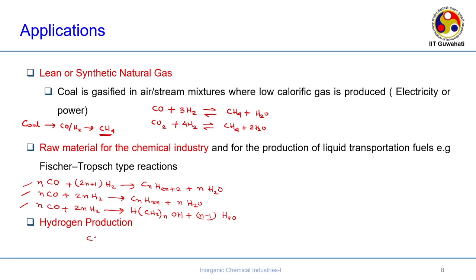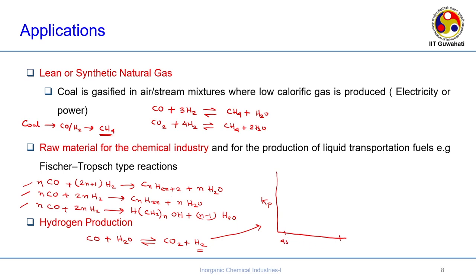For hydrogen production, the water gas shift reaction is used: CO plus H2O reacts to form CO2 plus H2. This is an important reaction. The equilibrium constant is particularly high at lower temperatures — so the lower the temperature, the more favorable the water gas shift reaction. This is the way coal can be applied for applications including lean gas production, raw material for the chemical industry, and hydrogen production.